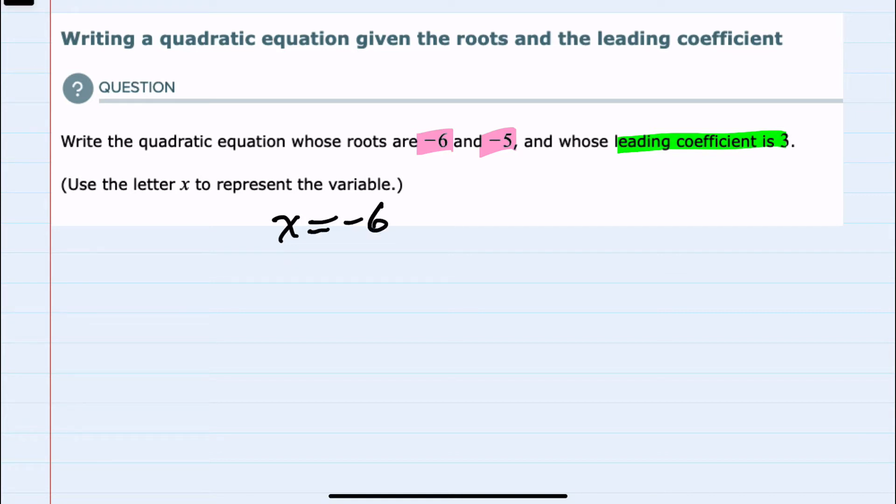Working backwards here to set these equal to 0, I could add the 6 over to this side giving me x plus 6 equals 0. Or doing the same on the right-hand side, adding 5 over to the other side leaves me with x plus 5 equals 0.